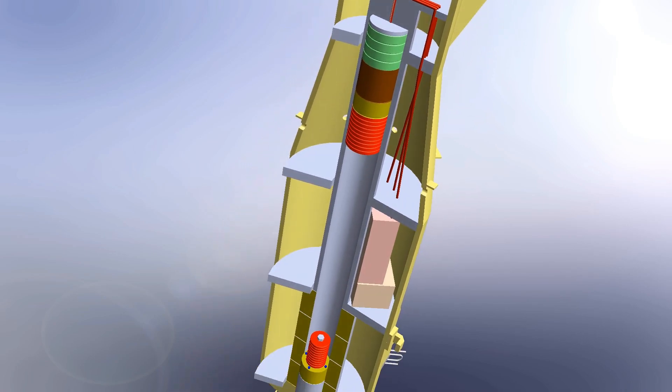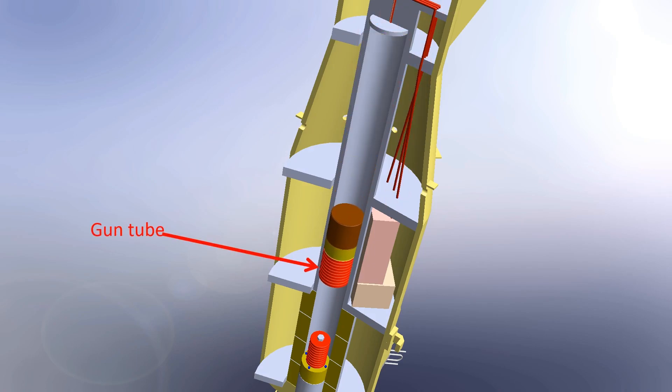When the cordite explodes due to the gun primer's ignition, it launches the uranium projectile assembly towards the opposite end of the gun tube at a speed of 300 meters per second. This is why it is called a gun-type nuclear design.